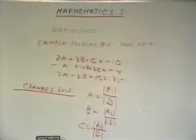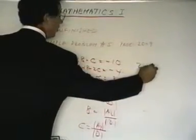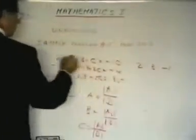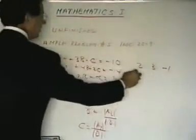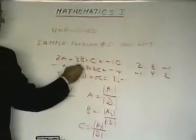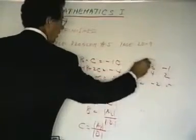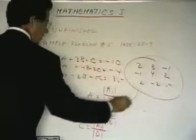Well, D is common to all three. What is D? D is the following determinant: 2, 3, minus 1, going across here. Minus 1, 4, 2. And 2, minus 2, 5. And this is D.